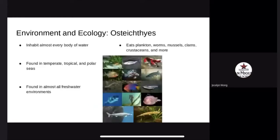Bony fish inhabit almost every body of water. They are found in tropical, temperate, and polar seas, as well as virtually all freshwater environments. Different species of fish are adapted for different habitats: rocky shores, coral reefs, kelp forests, rivers and streams, lakes and ponds, undersea ice, the deep sea, and other environments of fresh, salt, and brackish water.